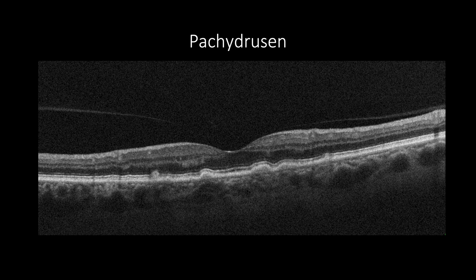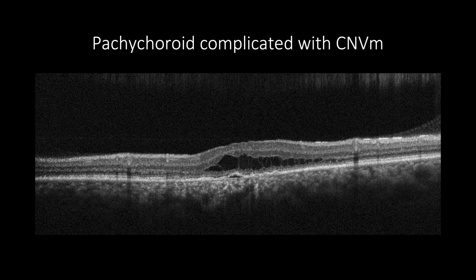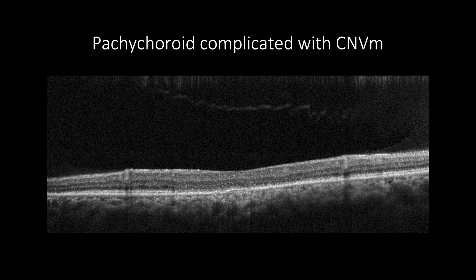Pachychoroid can be presented in cases of non-neovascular AMD with intermediate and/or larger drusen, which will have the same findings of intermediate non-neovascular AMD but with increased thickness of the choroid and dilated Haller's. In pachychoroid complicated with choroidal neovascularization, the neovascularization is usually type 1 without any signs of AMD such as drusen, especially in patients aged around 40 years. This case shows intraretinal cystic changes, increased macular thickness, and PED with increased reflectivity of Bruch's membrane showing a double layer sign, with increased choroidal thickness and dilated Haller's.